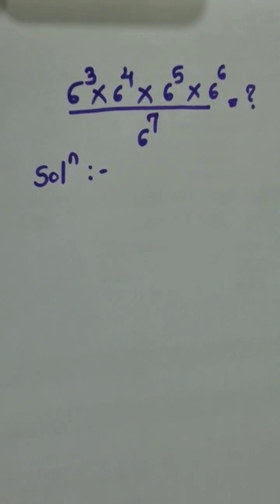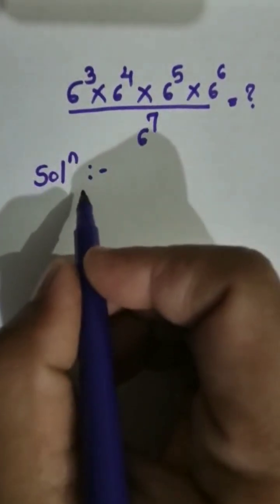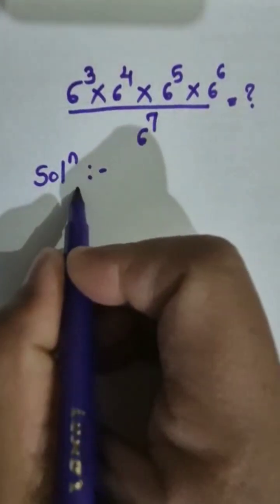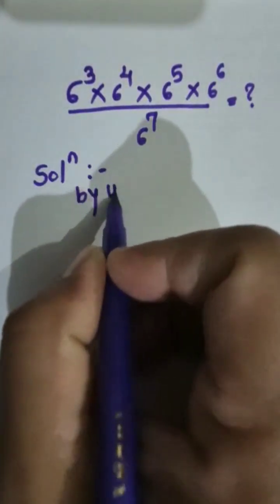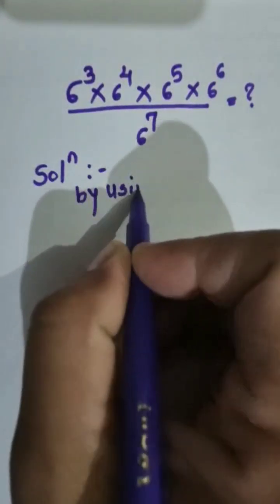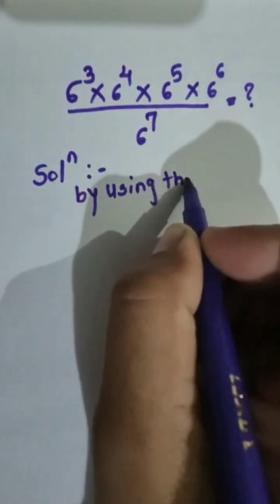The given problem is 6 raised to 3, into 6 raised to 4, into 6 raised to 5, into 6 raised to 6, divided by 6 raised to 7. What is the answer?